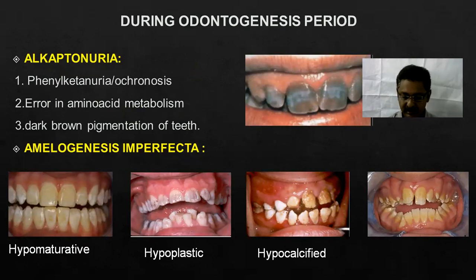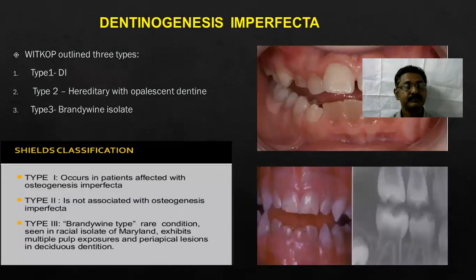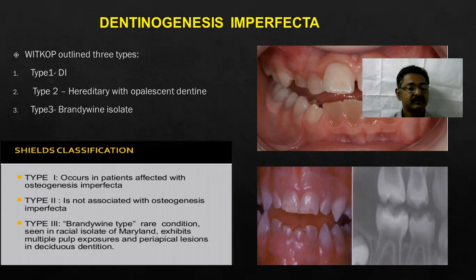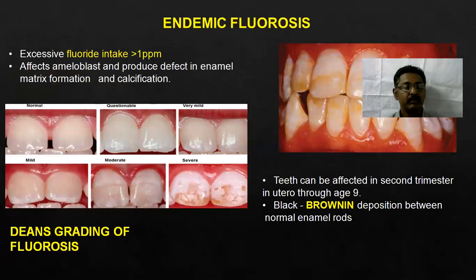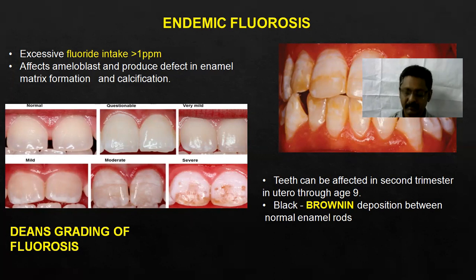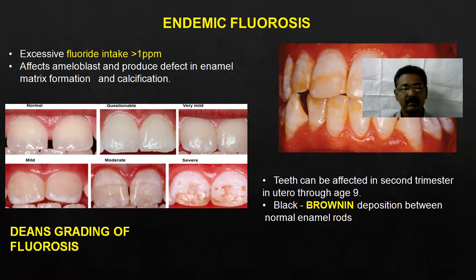So these are the different clinical conditions: alkaptonuria, amelogenesis imperfecta, dentinogenesis imperfecta — the Shields classification of dentinogenesis imperfecta is type 1, type 2, and type 3. Then fluorosis — what is fluorosis? Excessive intake of fluorides can cause fluorosis. The optimum level is one part per million; if it is more than one part per million, then it can cause fluorosis.